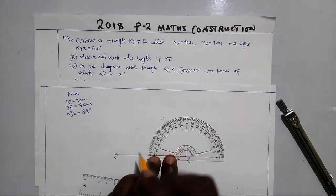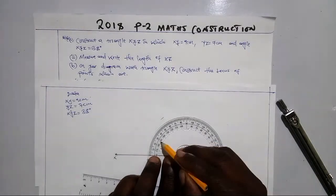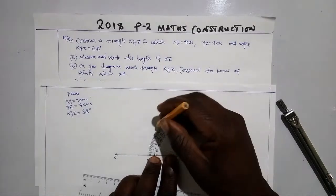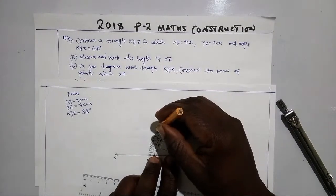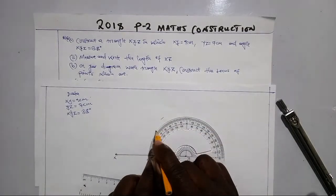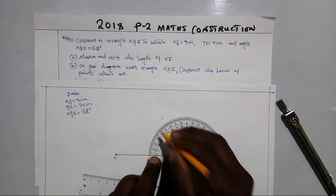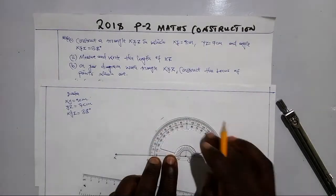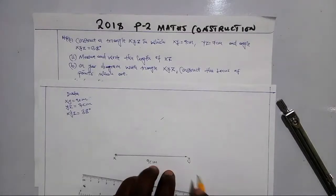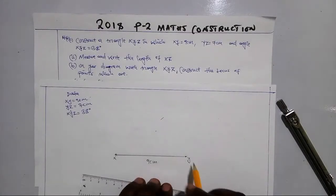When you measure 80 degrees with the protractor, it falls near 40 on one scale — but the correct reading is 80 degrees. Put a dot at that point to mark the direction of the angle.